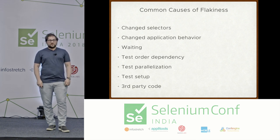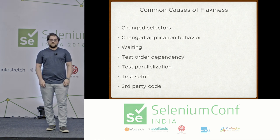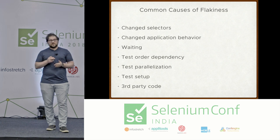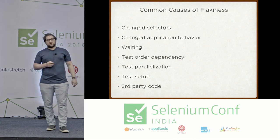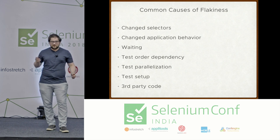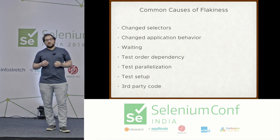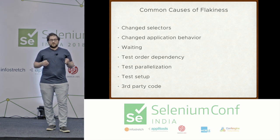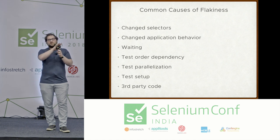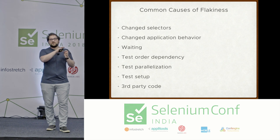Here are some common causes of flakiness. One of the biggest is changed selectors — there are talks at this conference about how to nail down your selectors. Another common cause is changed application behavior: as a test engineer you need to be aware that if the application changes and your test operates on the previous version, your test will fail.